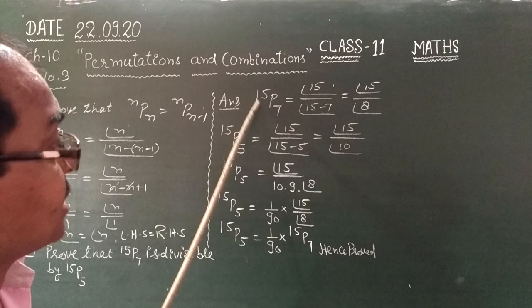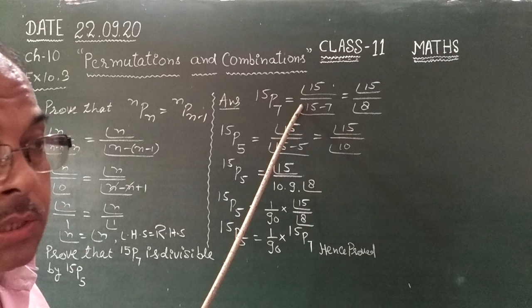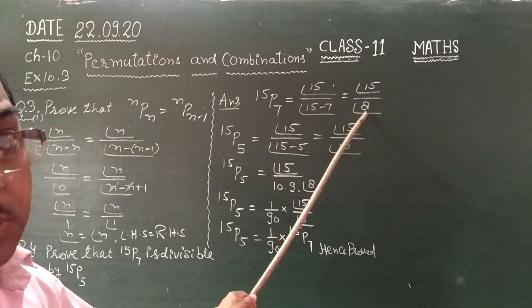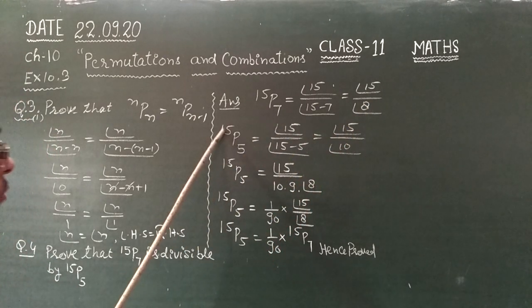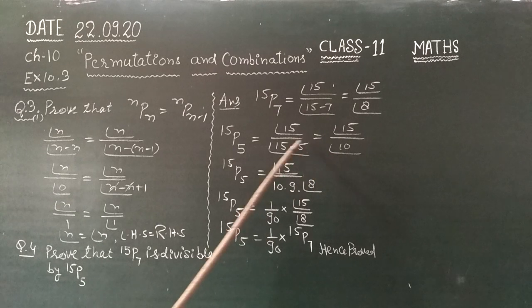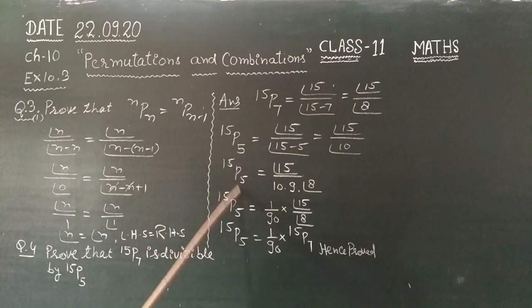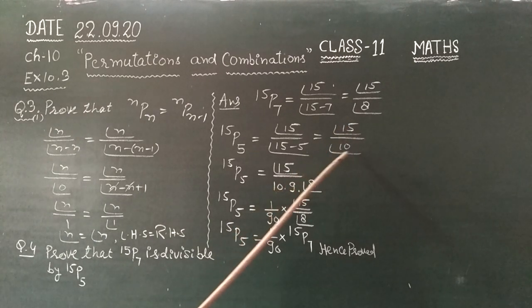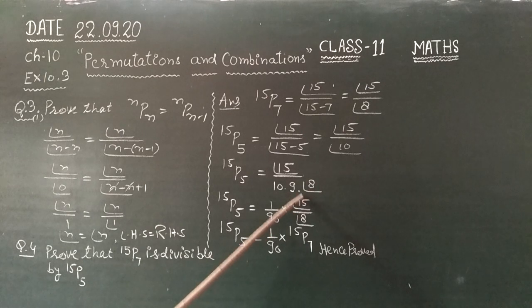Jaise ki 15P7, maine solve kiya. Upper ka factorial n, 15 minus 7 factorial, niche hai. Formula: factorial n upon factorial (n-r).